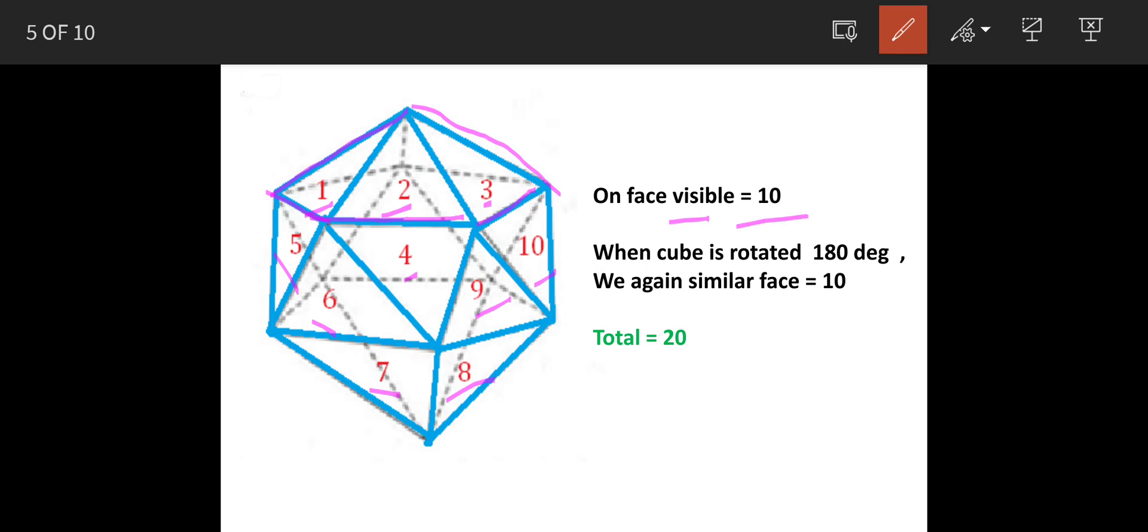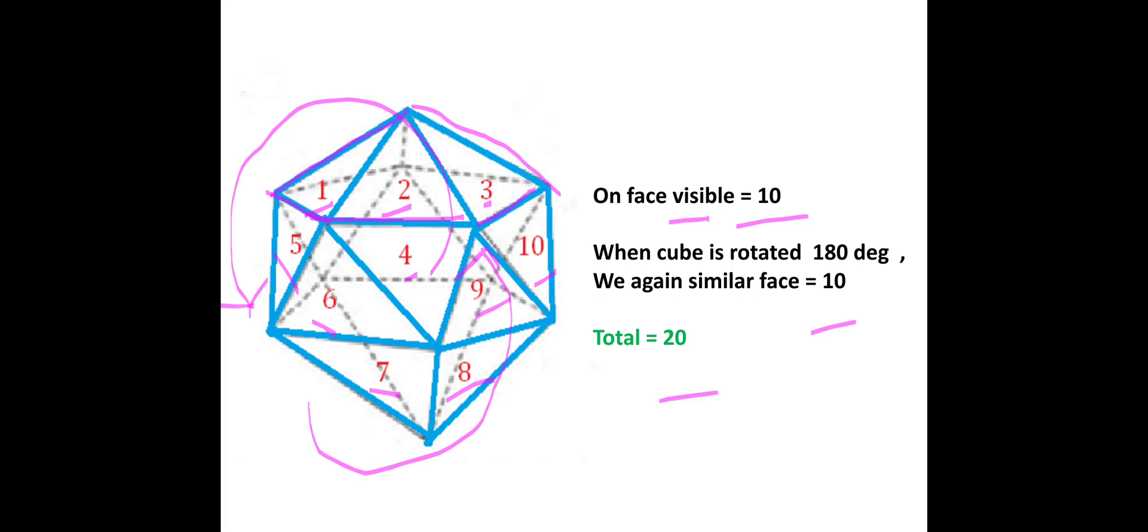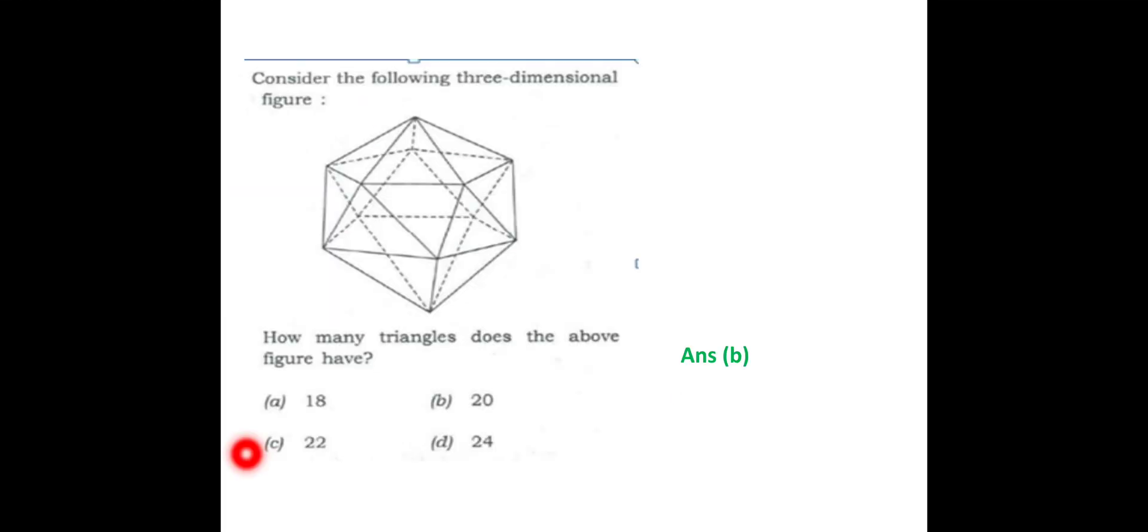So there are total ten on one side, and similar ten are on the other side when it is taken on the other side and the other side comes up. So total are 20. So the answer is option B.